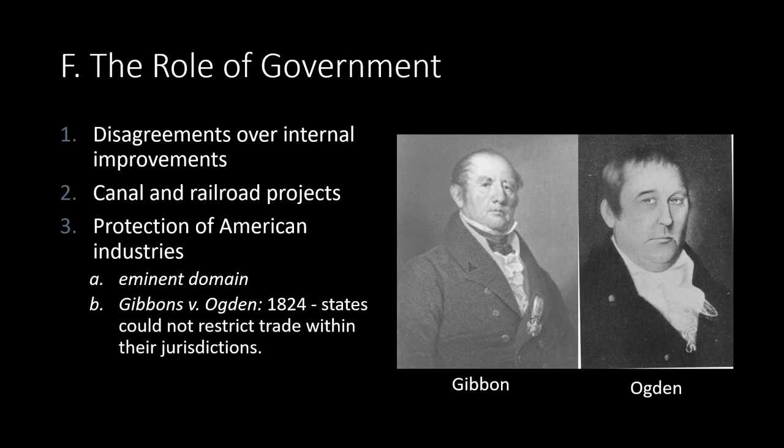The court system also supported corporate rights to eminent domain, meaning corporations could purchase rights of way on land whenever needed. In the Supreme Court decision of Gibbons v. Ogden in 1824, involving coastal commerce, the Supreme Court overturned a steamboat monopoly granted by the state of New York on the grounds that only Congress had the authority to regulate interstate commerce — states could not restrict trade within their jurisdiction.